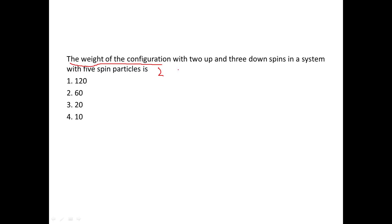There are five spin particles given. Since the spin is equal to one-half, these are five indistinguishable particles. It is given that two have up spins and three have down spins. So now in how many ways can we arrange this particular configuration?